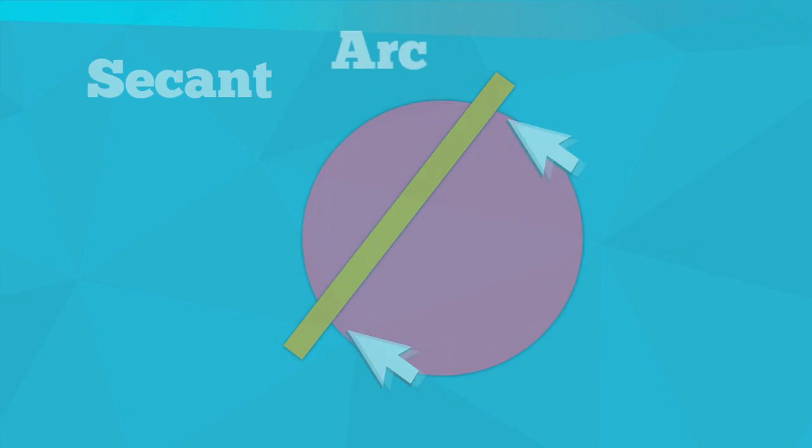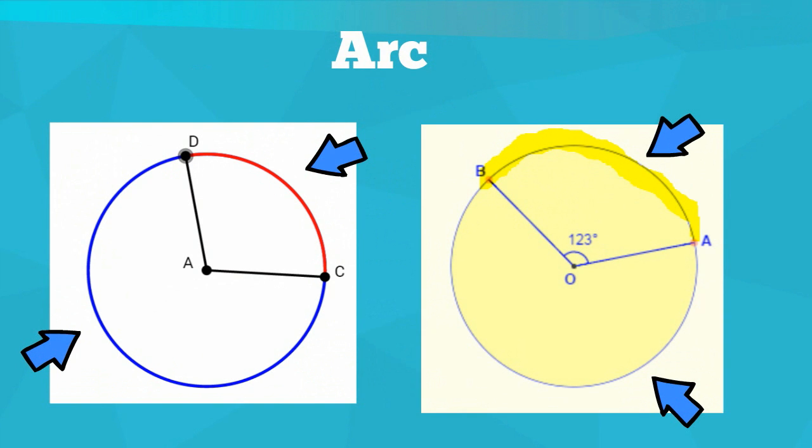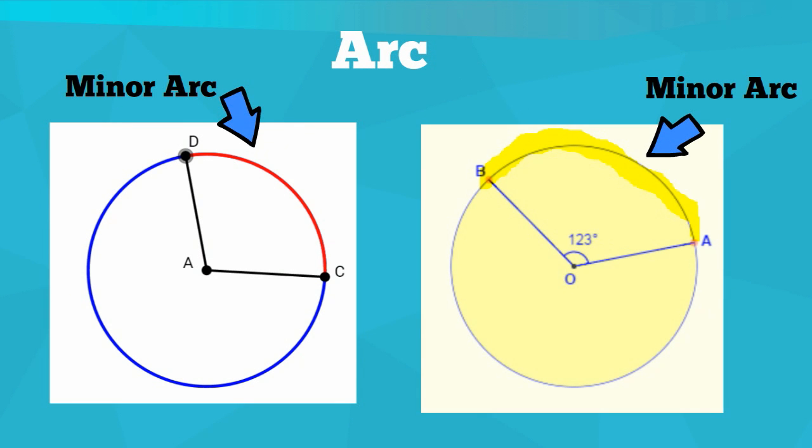An arc is the distance around a fraction or a portion of the circumference. The minor arc is an arc with a measure less than 180 degrees.